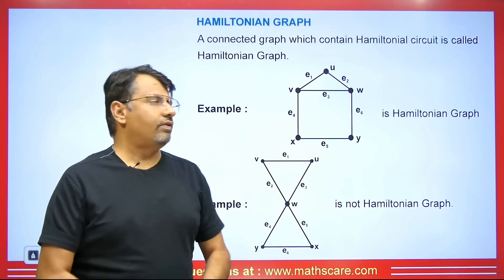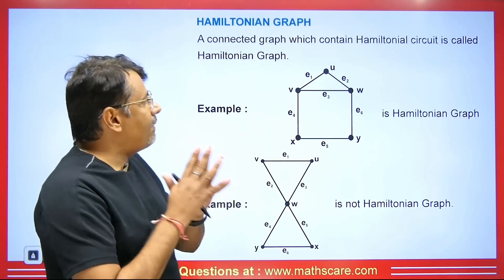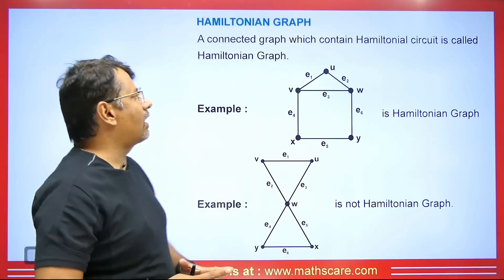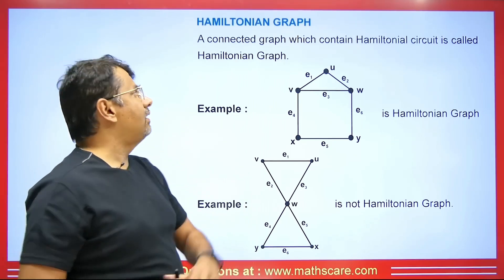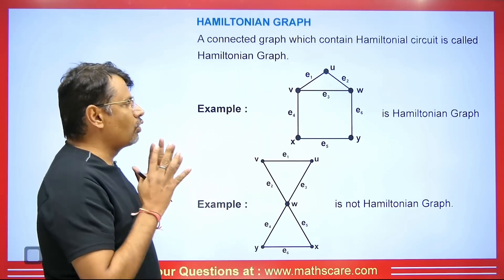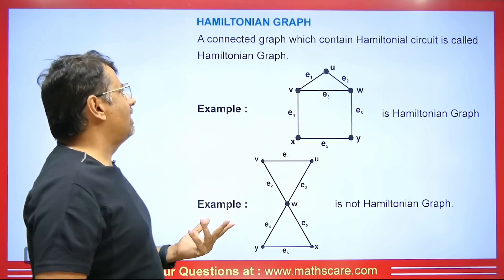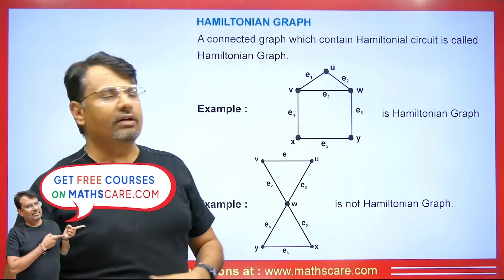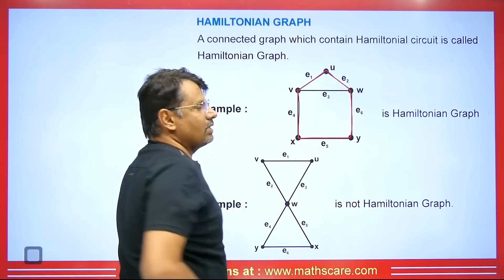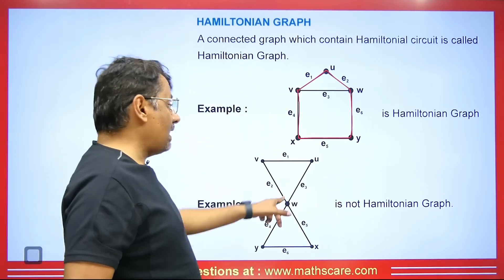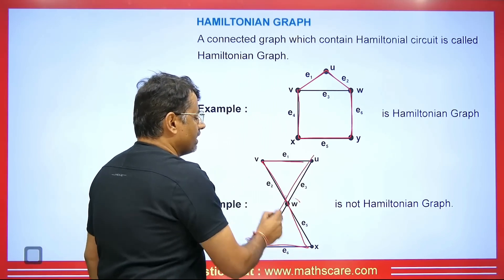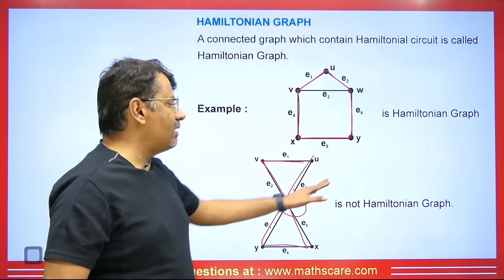Now let's see what is a Hamiltonian graph. A connected graph which contains a Hamiltonian circuit is called a Hamiltonian graph. If we have a connected graph and it covers the Hamiltonian circuit, it will be a Hamiltonian graph. However, if when trying to cover the circuit vertex W repeats, then it will not be a Hamiltonian graph.